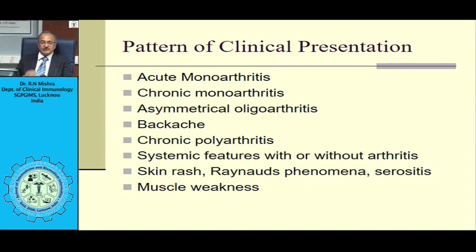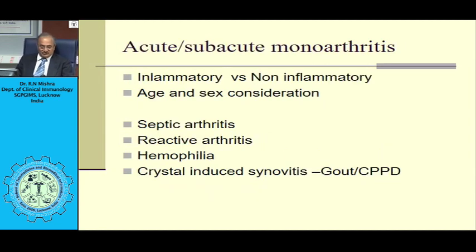Patients presenting with musculoskeletal complaints can be categorized as having acute monoarthritis, chronic monoarthritis, asymmetrical oligoarthritis, backache, chronic polyarthritis, systemic features with or without arthritis, skin rash, Raynaud's phenomenon, serositis, or muscle weakness.